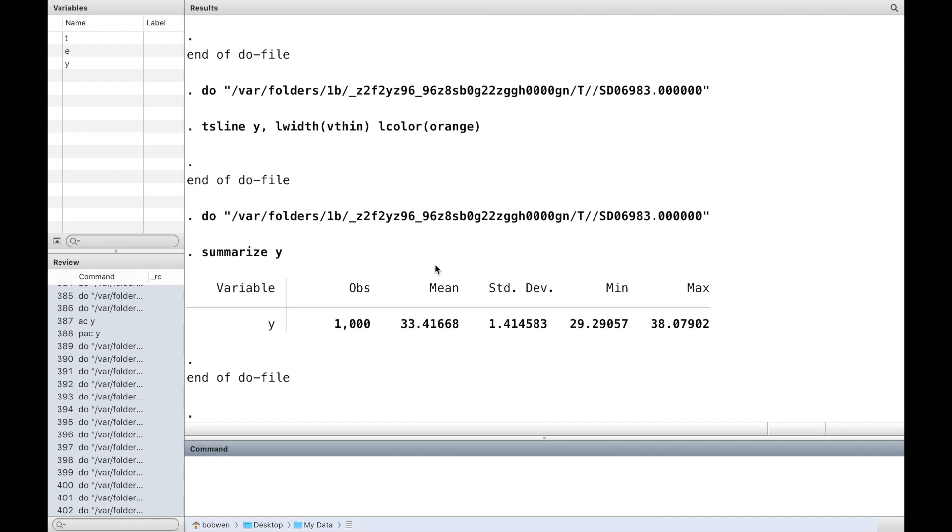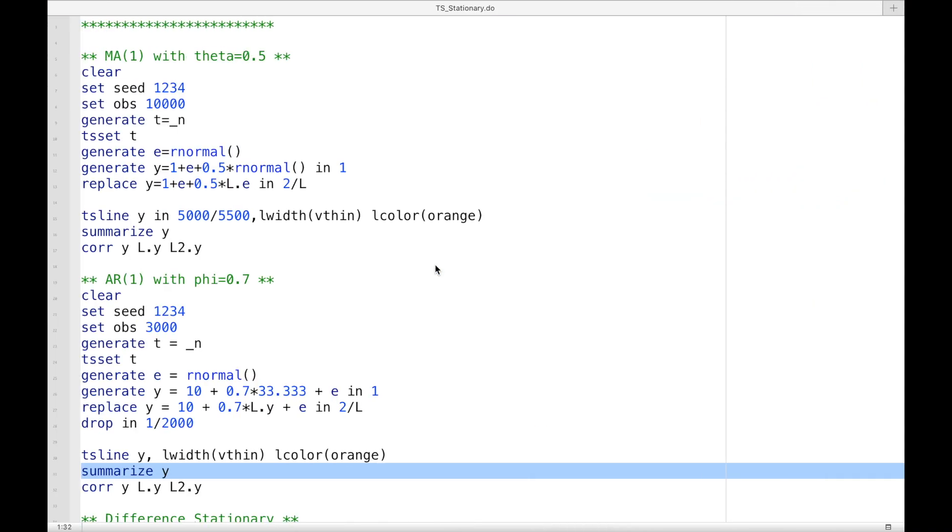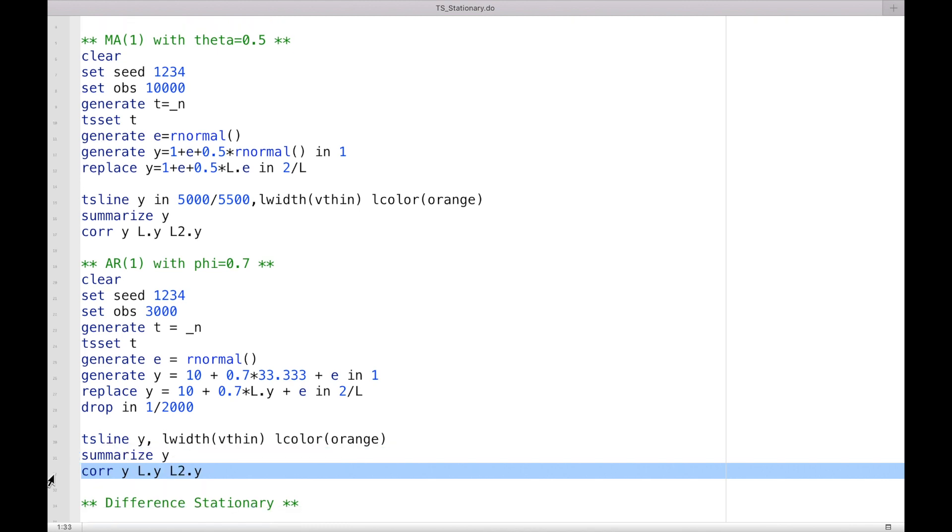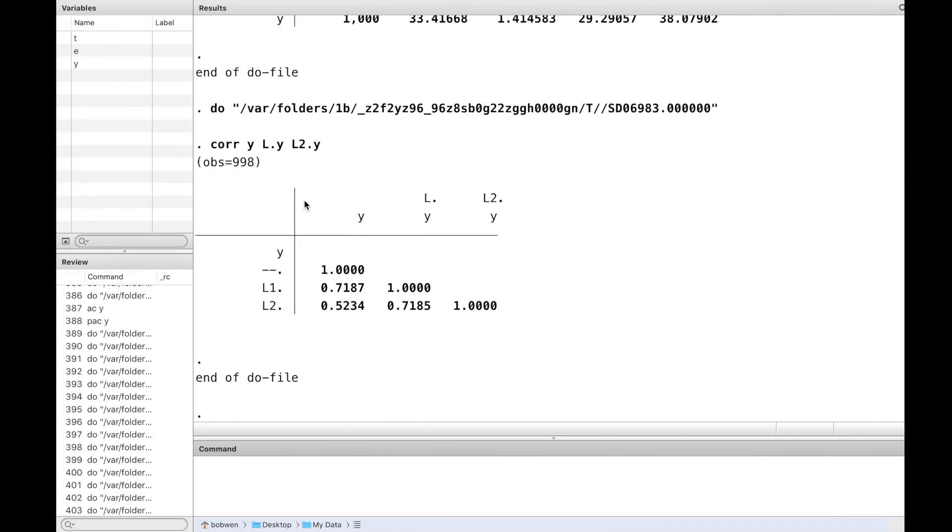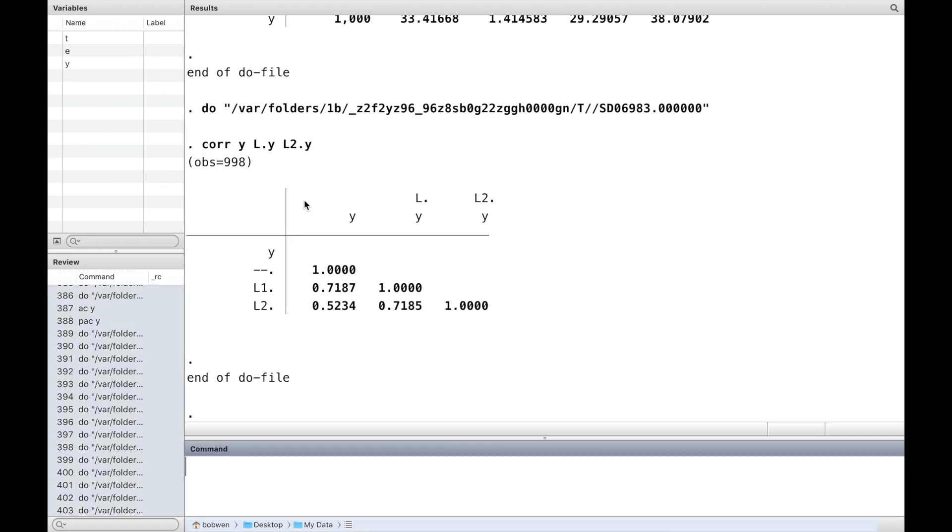The mean is equal to beta divided by 1 minus phi. The first autocorrelation is equal to phi, and the second autocorrelation is equal to phi squared.